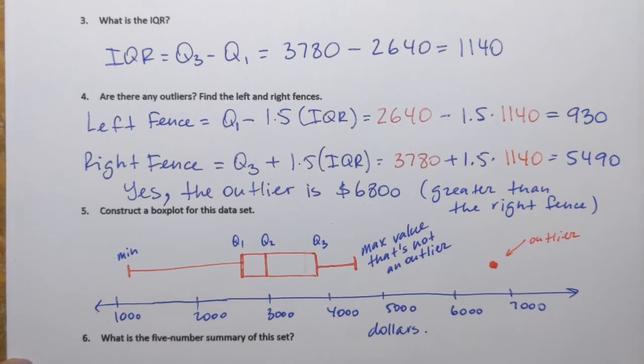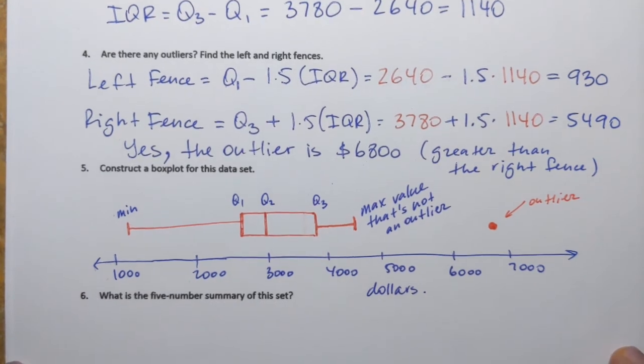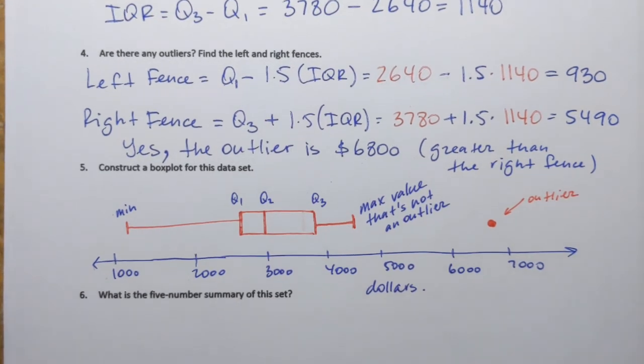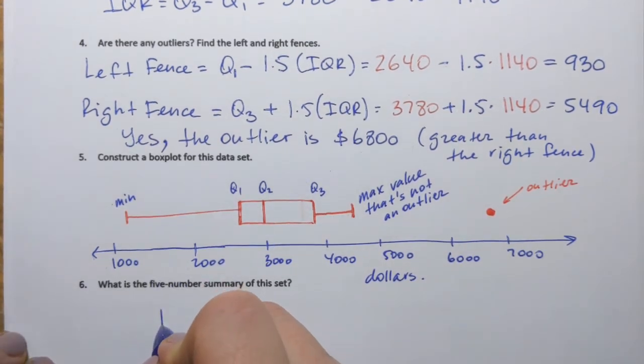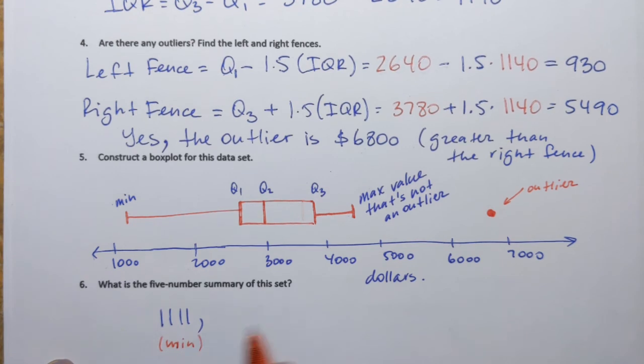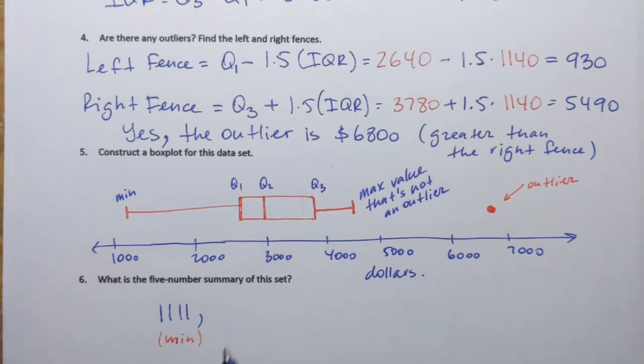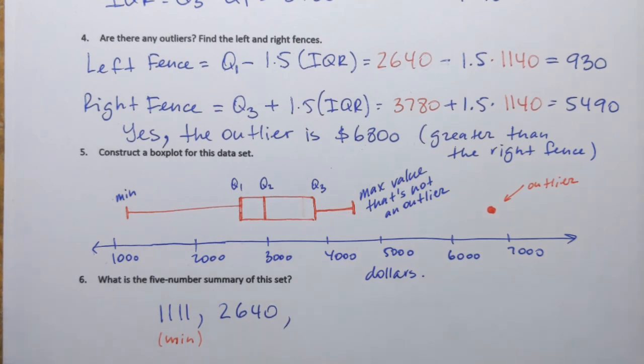And let's finish by stating the five number summary of this set. So five number summary is just five numbers, but each has meaning. So those numbers are minimum value. So in our data set, it's 1,111. That's the minimum value. Next, we need to write down Q1. And that is Q1, 2,640. That would be Q1.